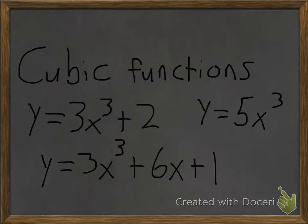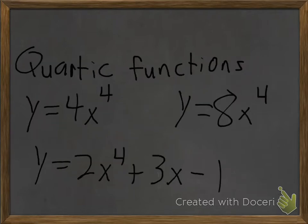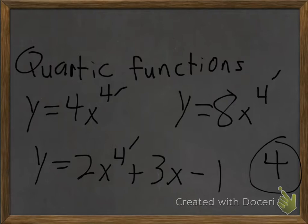In a cubic function, your degree is always going to be 3 — as you can see, the highest exponent in any of these equations is 3, so they're all cubic functions. In a quartic function, your degree is always going to be 4 — as you can see in all these equations, your highest exponent is 4, so they're all quartic functions.